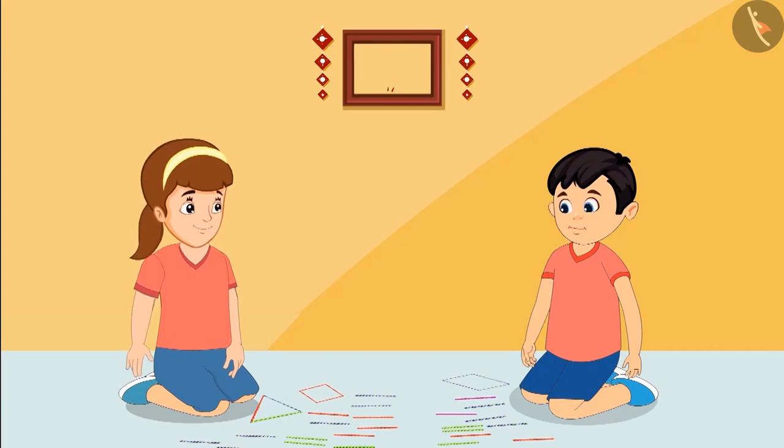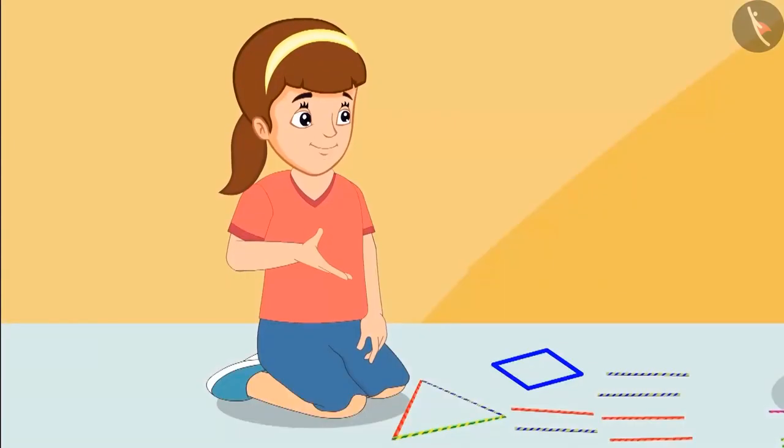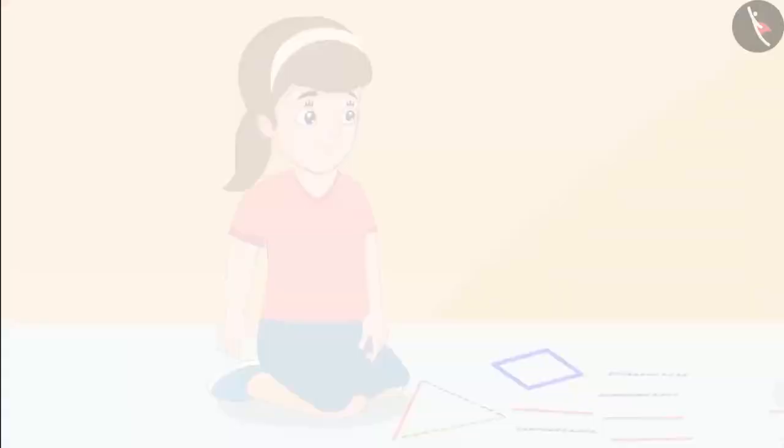Okay. Fine Chotu, I have understood. This means that this shape is square because it is made of four equal length straws.